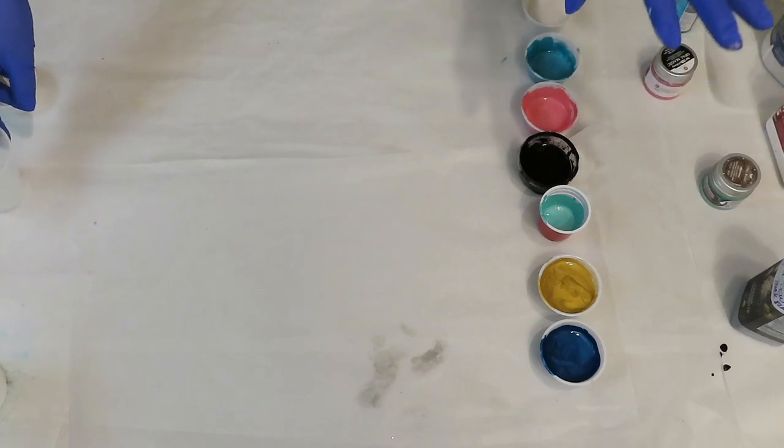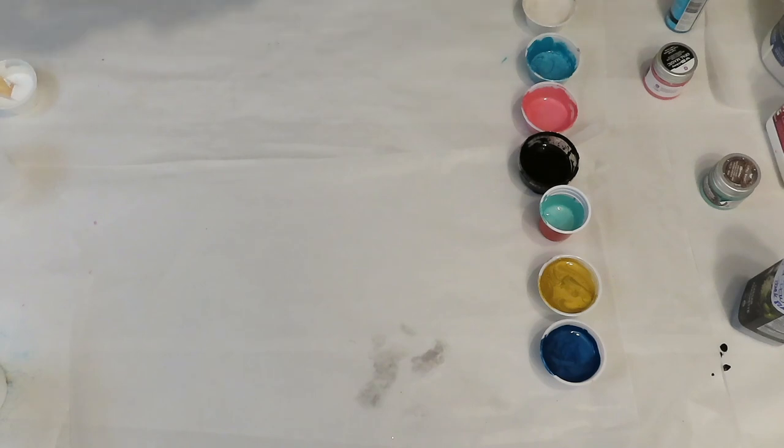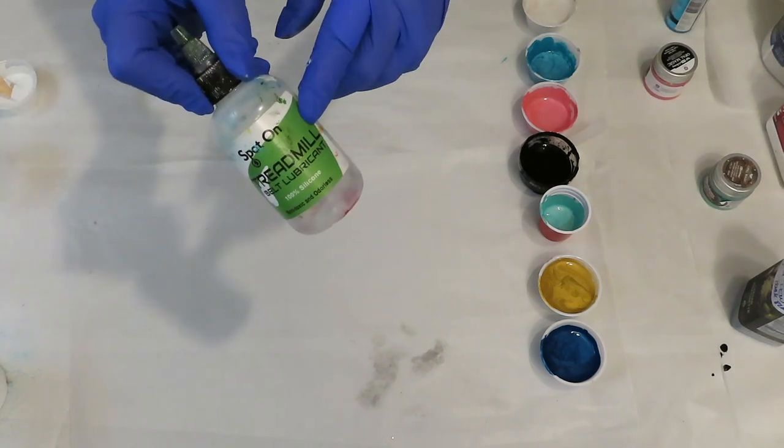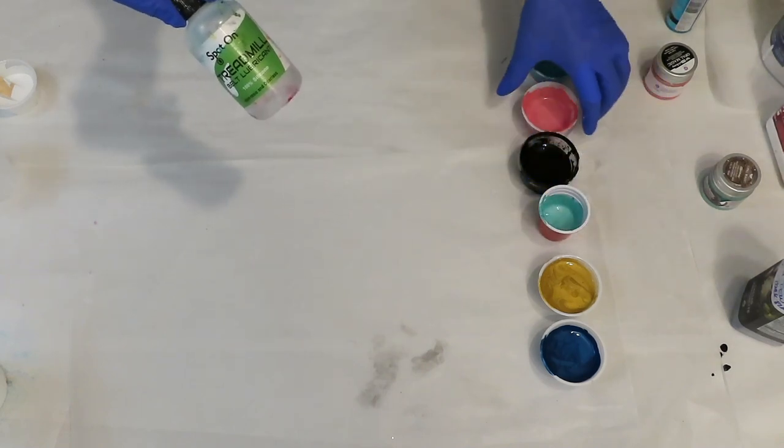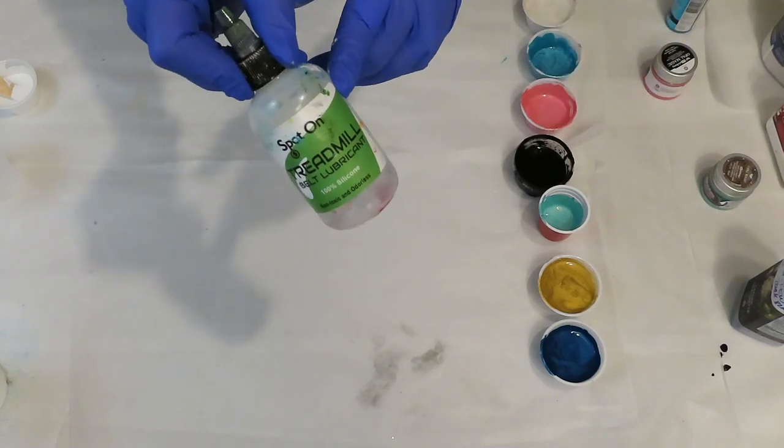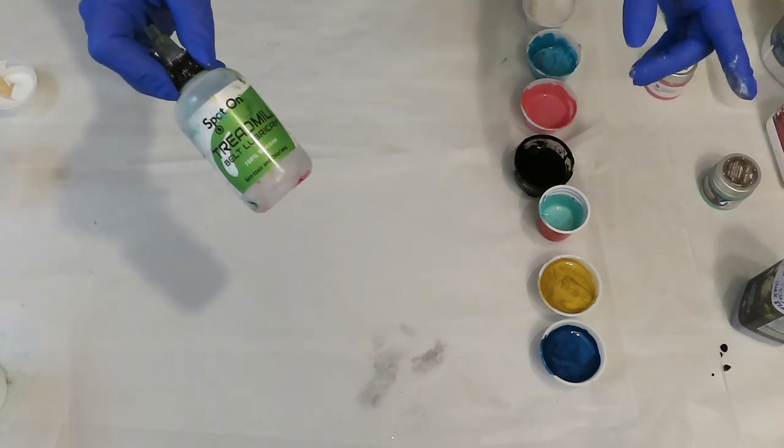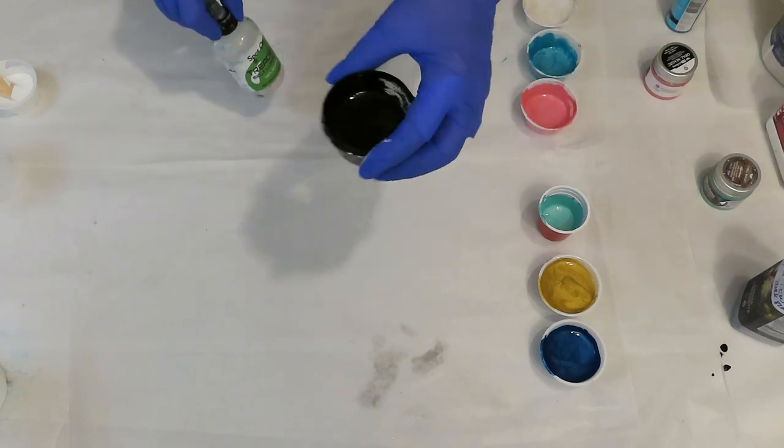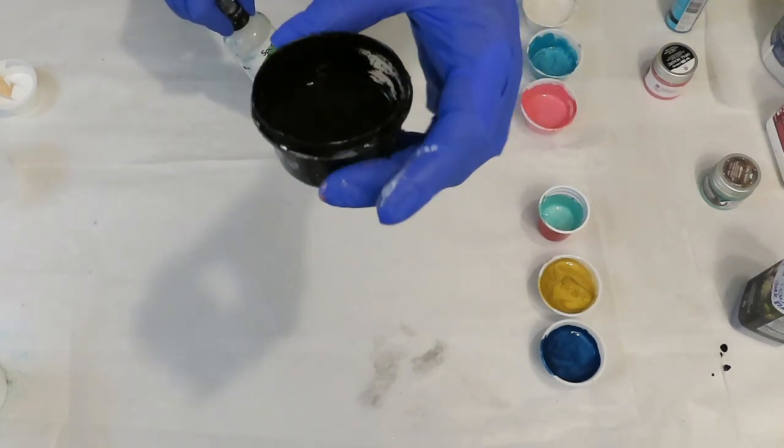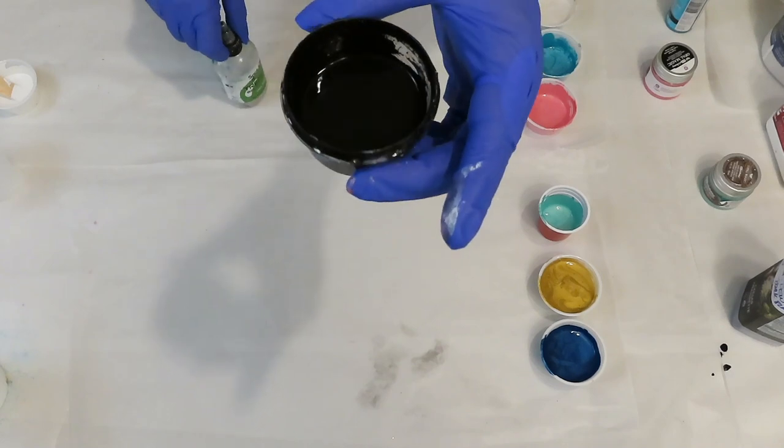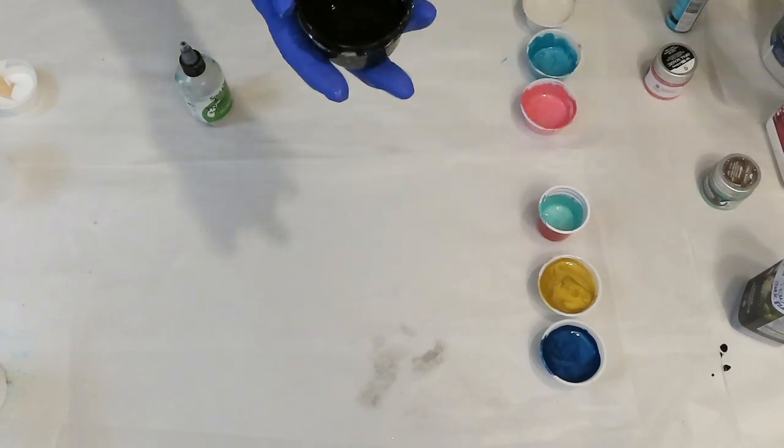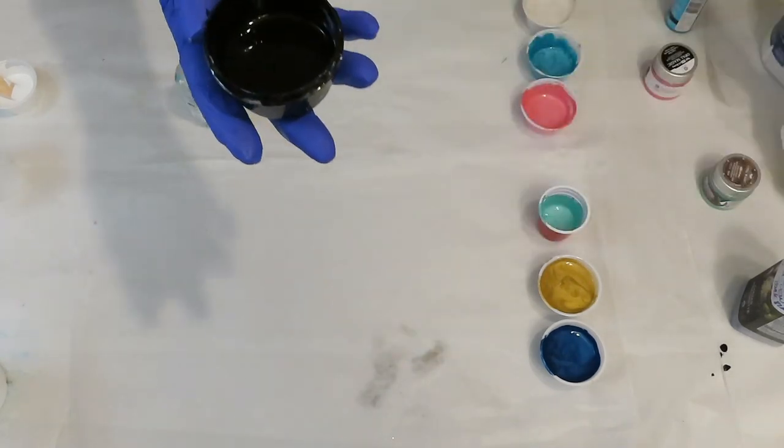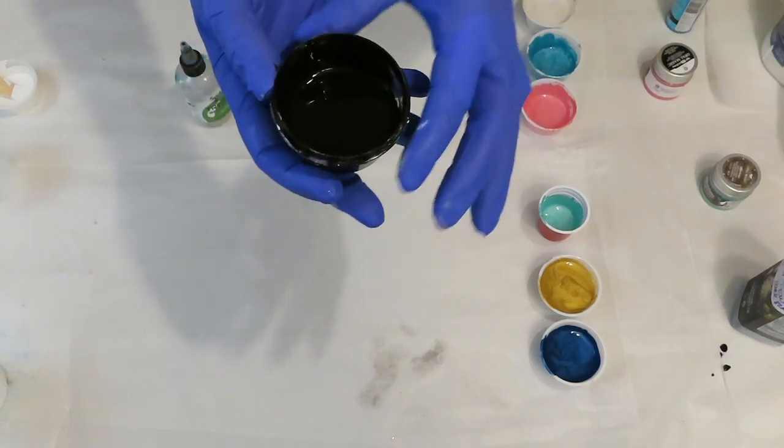All my colors are mixed with Floetrol and water only. I haven't used silicone forever either, so today I'm using silicone, one drop in both the blues and the pink. The cell activator with this black is a cell activator I use on my Shelly Art technique, and it's half American Floetrol, half Australian Floetrol.